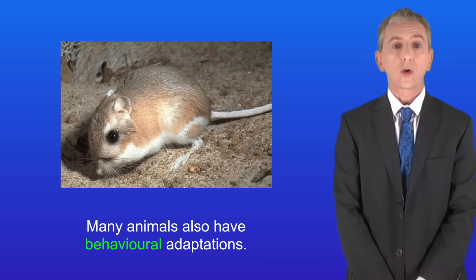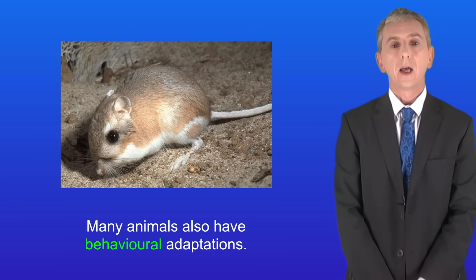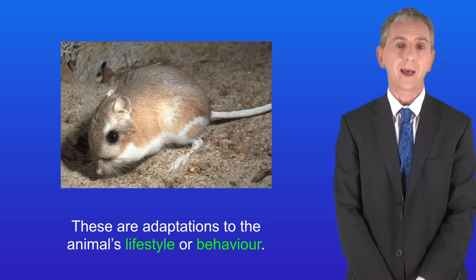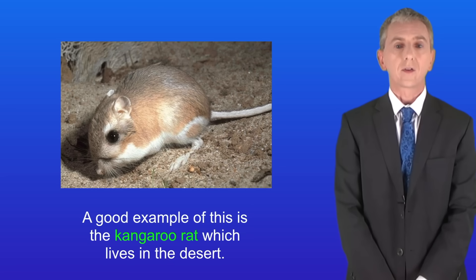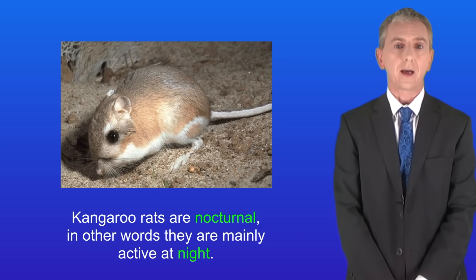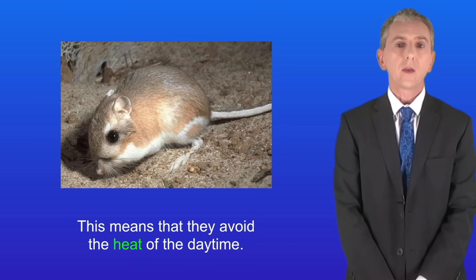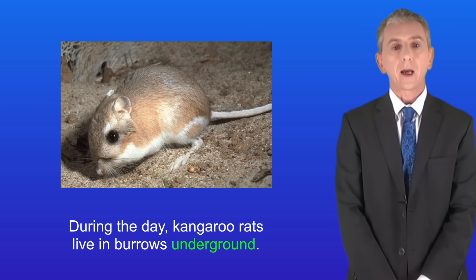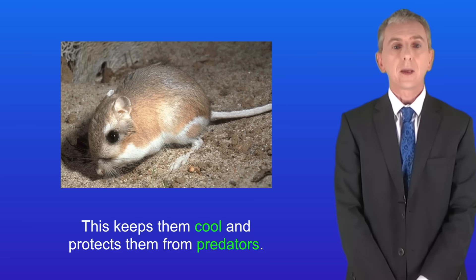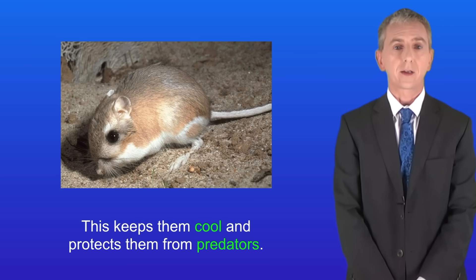Many animals also have behavioural adaptations, and these are adaptations to the animal's lifestyle or behaviour. A good example of this is the kangaroo rat which lives in the desert. Kangaroo rats are nocturnal — in other words they're mainly active at night — which means that they avoid the heat of the daytime. During the day, kangaroo rats live in burrows underground and this keeps them cool and protects them from predators.